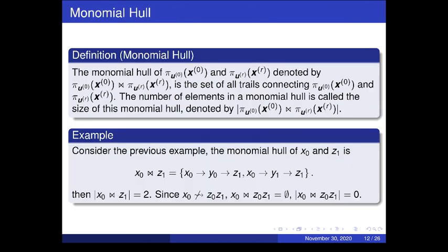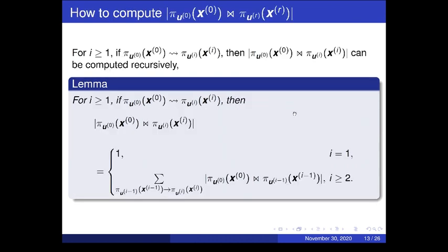To study the number of trails, we introduce the concept of monomial hull. The monomial hull is defined as the set of all monomial trails connecting two monomials, denoted by this notation. The number of elements in a monomial hull is called the size of the monomial hull, denoted by this. The size of a monomial hull can be computed recursively, step by step.